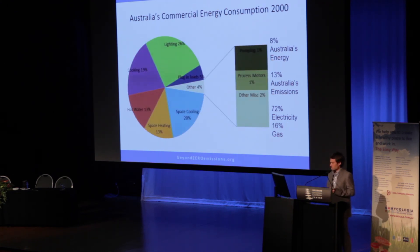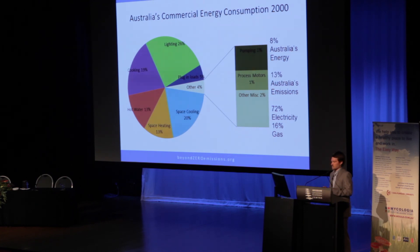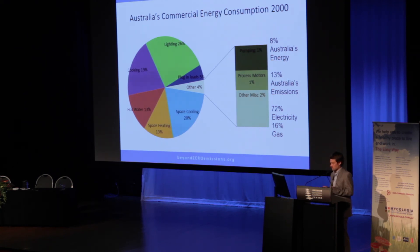Looking at the commercial sector — this is some older data from around 2000 — it has obviously improved since then, but there's still a very large portion of energy use in lighting, hot water, space conditioning, heating, and particularly cooling. The commercial sector is actually a really easy opportunity, because 72% of it is actually electricity.